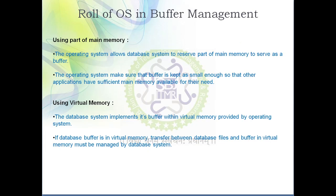Now let's look at the role of the operating system in buffer management. First, the OS uses a part of main memory as a buffer. The operating system allocates a particular part of main memory as a buffer, and this depends on the system architecture and total resources available. The allocation varies from system to system based on architecture and available resources.